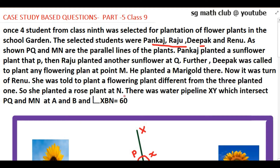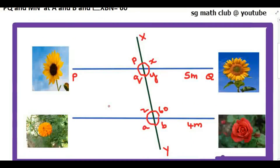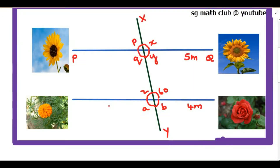There was a water pipeline XY which intersects PQ and MN at A and B. Angle XBN is given as 60 degrees. So this is the given data.